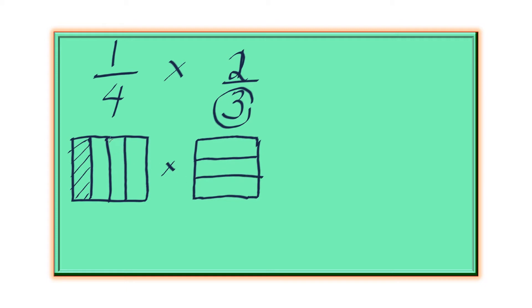So the first square, we did it vertically. The second square has to be done horizontally. There are 3 sections in it and then 2 of them have to be shaded. We use different designs to represent the shaded sections of this square. So 2 of them are shaded.